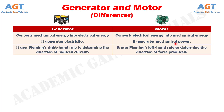Number 3. A generator uses Fleming's right-hand rule to determine the direction of induced current, whereas a motor uses Fleming's left-hand rule to determine the direction of force produced.